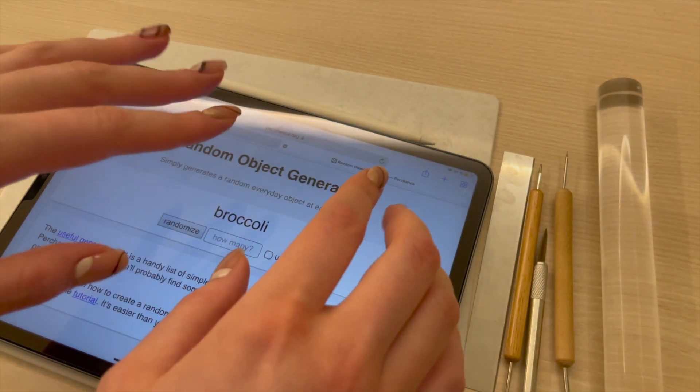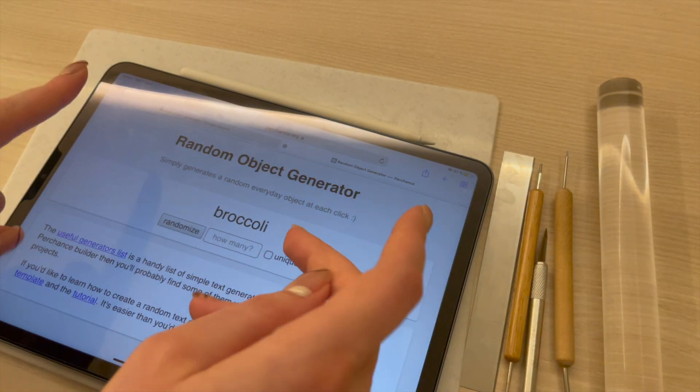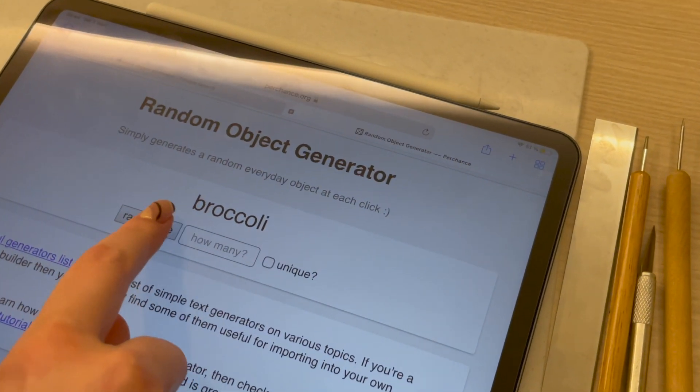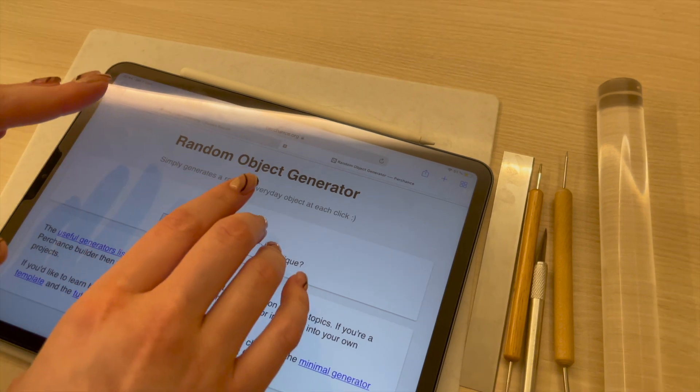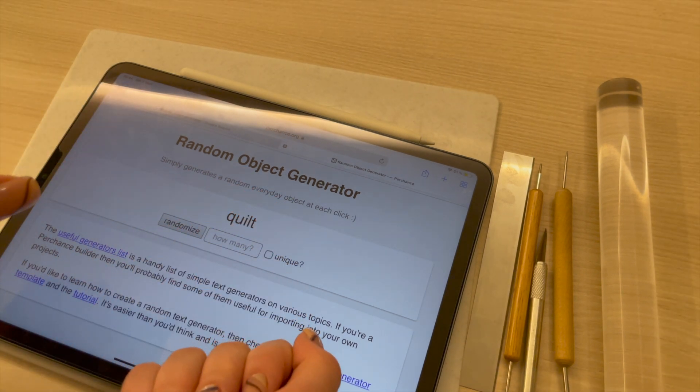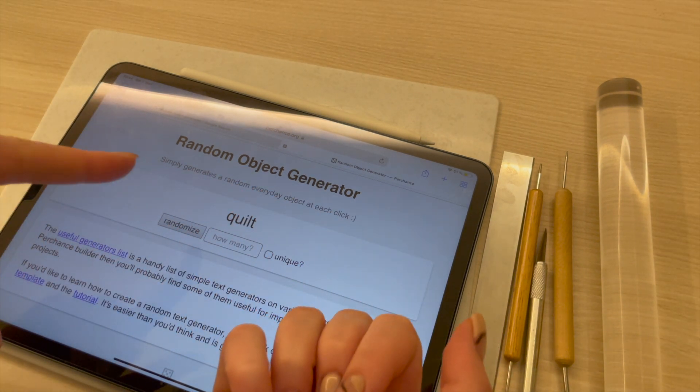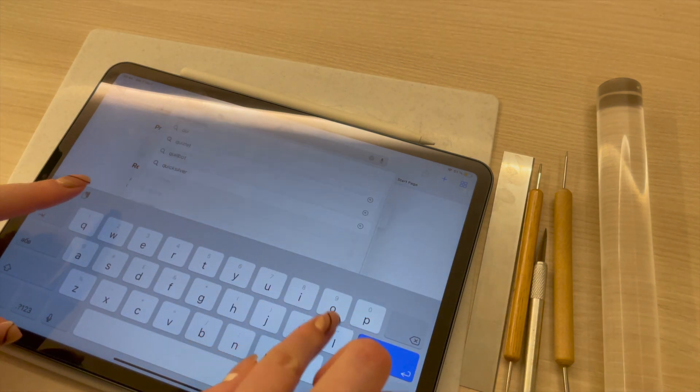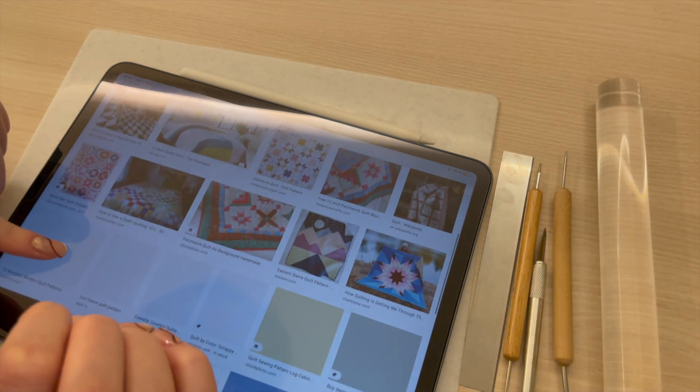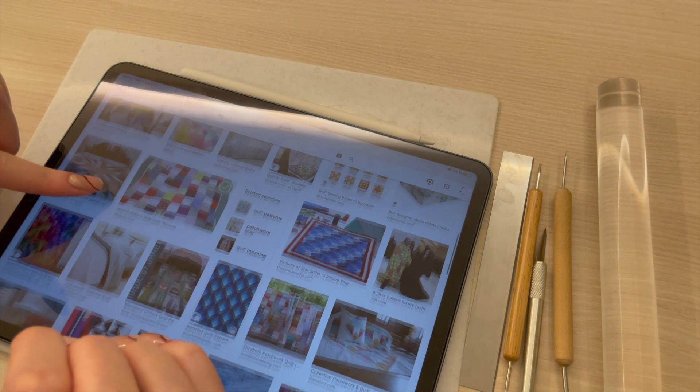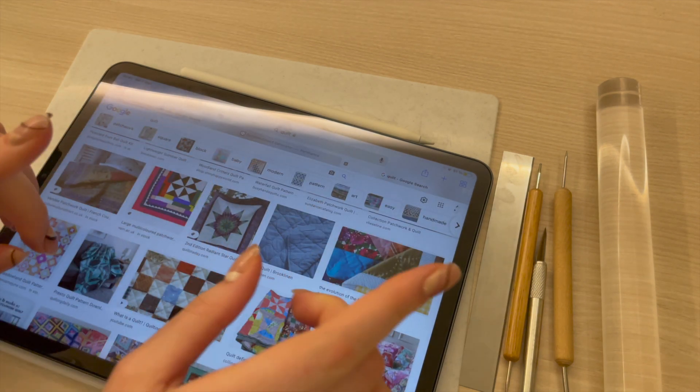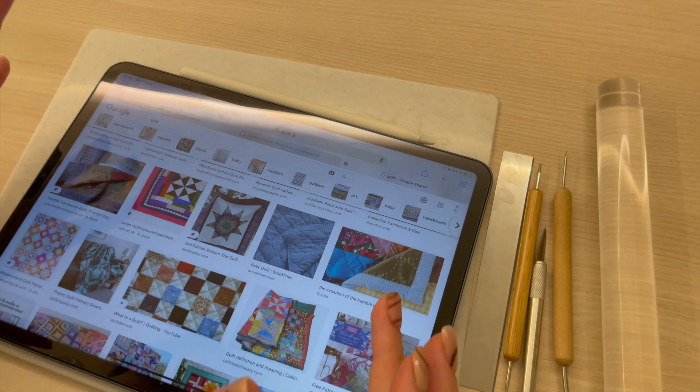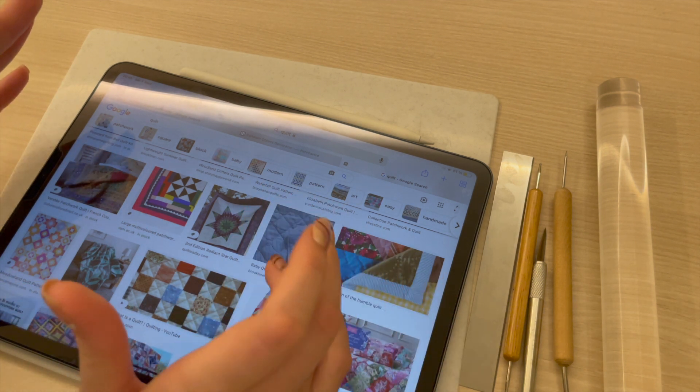While the broccoli is baking I'm gonna move on to the next object. Again I'm gonna randomize it three times. I am not too sure if I want to do this. I think that's gonna be a bit difficult. But I don't want to cheat and randomize it again. So I think I'll go with a quilt I guess.